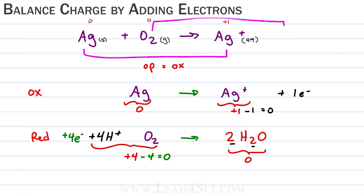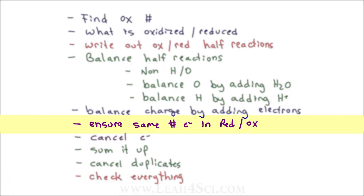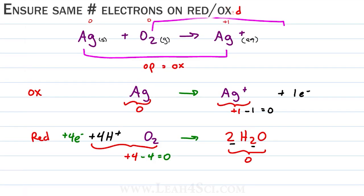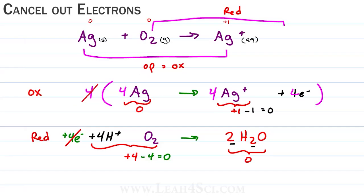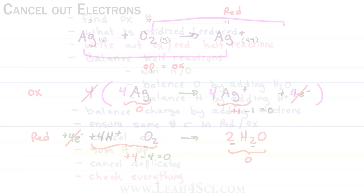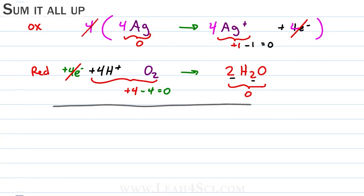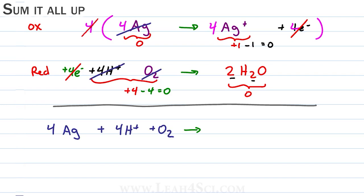Our atoms are balanced and our charge is balanced. Now we want to make sure we have the same number of electrons in both half reactions. We have four electrons in the reduction half reaction and one electron in the oxidation half reaction, so we multiply the entire oxidation half by four, giving us four Ag goes to four Ag+ plus four electrons. Now that the electrons are equal, we cancel them out and sum it all up. On the reactant side we have four Ag plus four H+ plus O2; on the product side we have four Ag+ and two H2O.